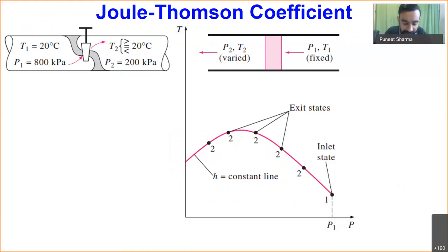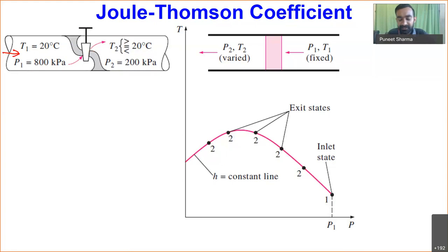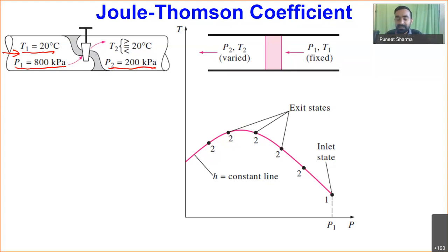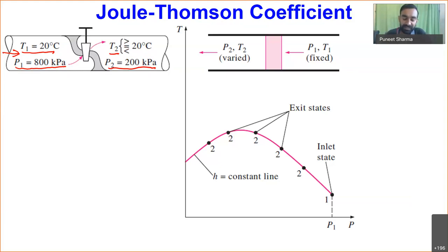This is a typical representation of a throttling device — a pipe in which flow is taking place from left to right and we are having some obstruction. This obstruction will decrease the pressure on the downstream side. In the upstream we have pressure of 800 kPa and temperature of 20°C, and in the downstream we have pressure of 200 kPa. The temperature T2 can be either greater than 20, less than 20, or equal to 20°C, and this is decided by the Joule-Thompson coefficient.